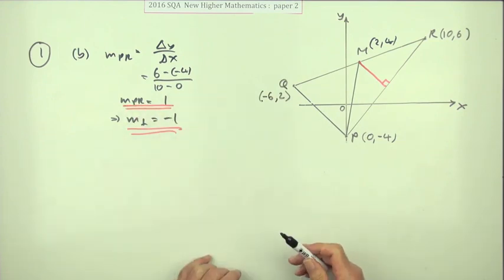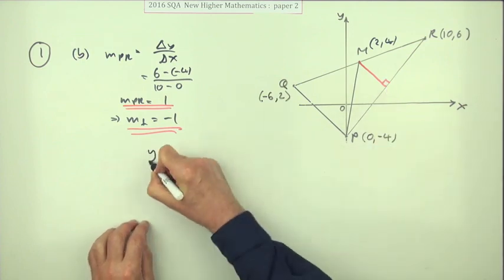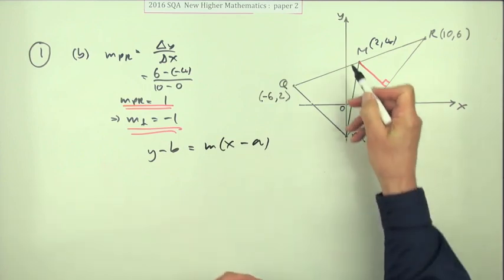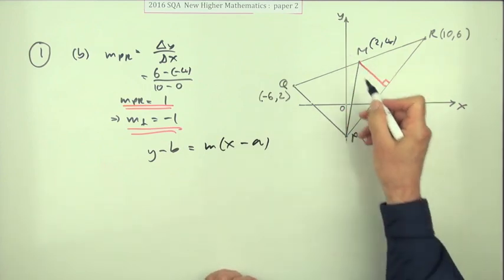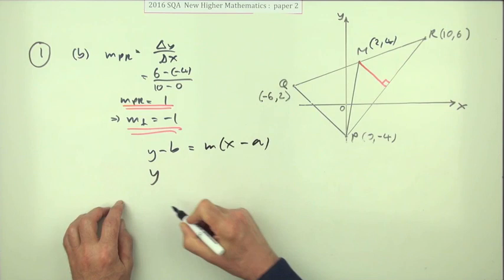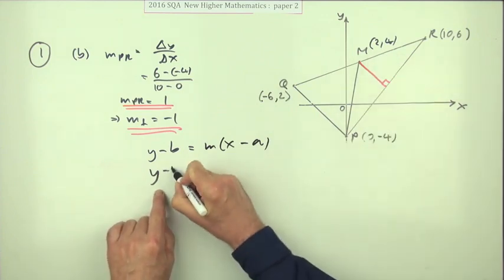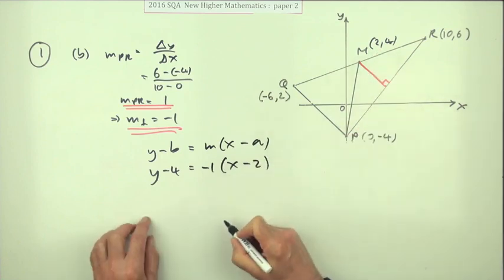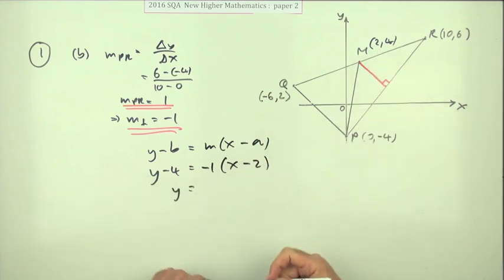So that should be a mark each. And the last part is, so what's the equation of the line? So you'll be using Y minus B equals M(X minus A) because you can't resort to saying Y equals MX plus C because you don't know where it cuts. Feed it into this. Y minus the Y coordinate, Y minus 4 is the gradient negative 1 times X minus the X coordinate, X minus 2. You may well get that.